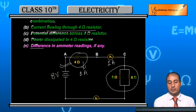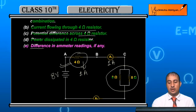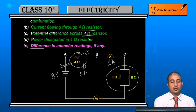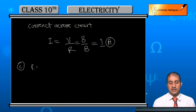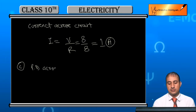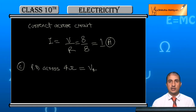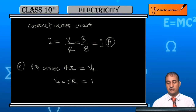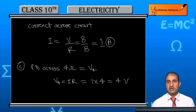For Part C, we need to find the potential difference across the 4-ohm resistor. In a series circuit, the potential difference is different across each component. Let V4 be the potential difference across the 4-ohm resistor. V4 = I × R = 1 × 4 = 4 volts. So the potential difference across the 4-ohm resistor is 4 volts.